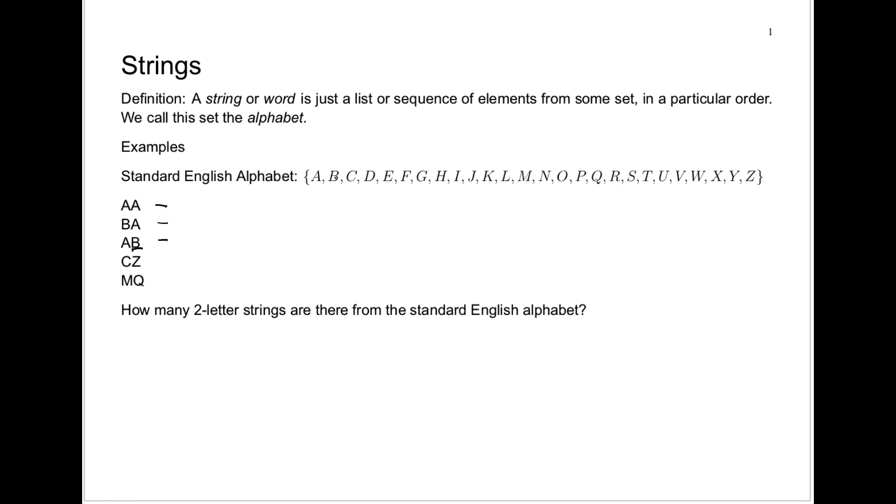In the end, we'll get 26 times 26, which you can compute very easily. That should be 676. We'll write this as 26 squared. 676 different two-letter strings or two-letter words using the standard English alphabet.